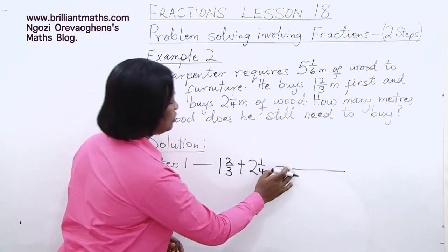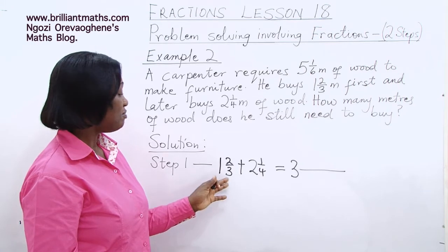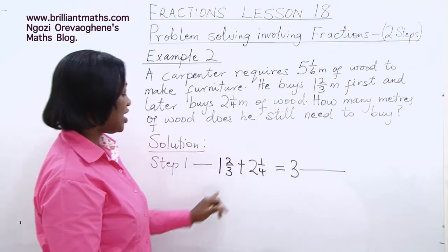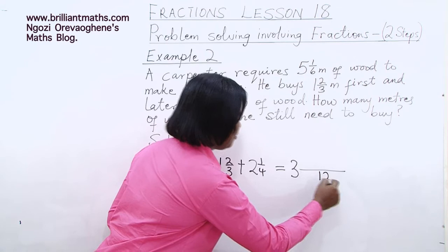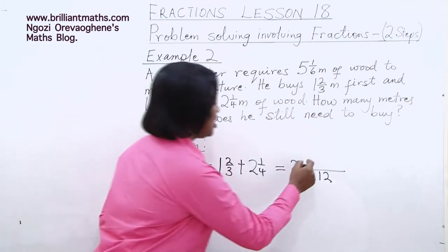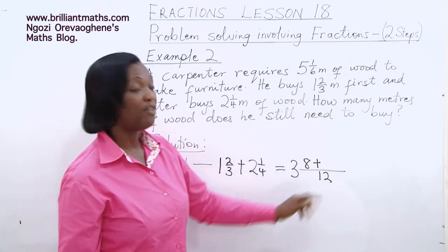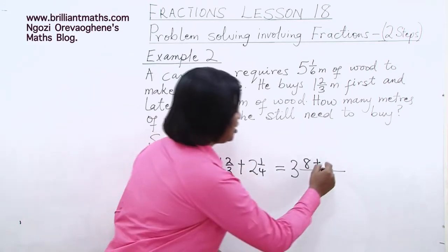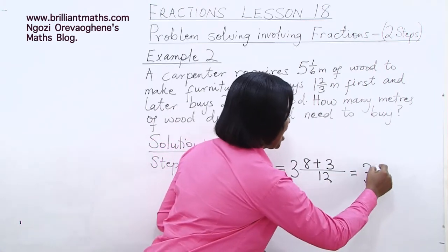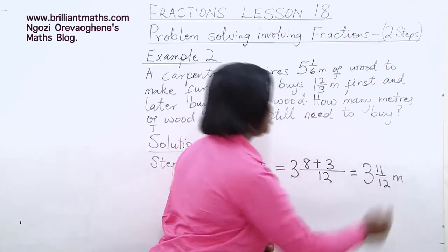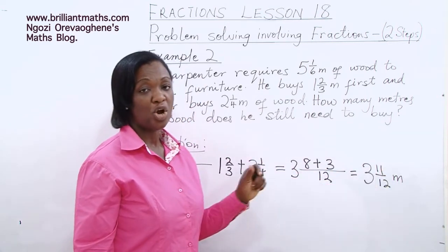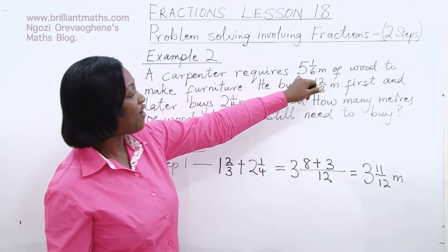We add the whole number parts first: one plus two is three. The LCM of 3 and 4 is 12. Three into 12 is 4; four times two is 8. Four into 12 is 3; three times one is 3. So our answer is 3 and 11 over 12 meters. That means the carpenter has bought 3 and 11/12 meters of wood already, but he needs a total of 5⅙ meters.